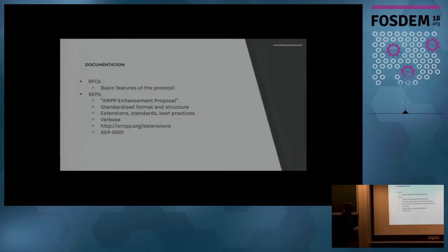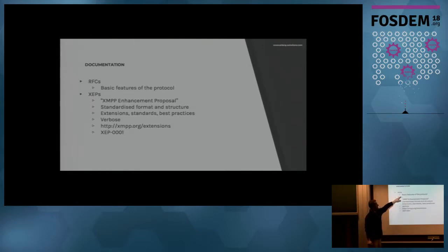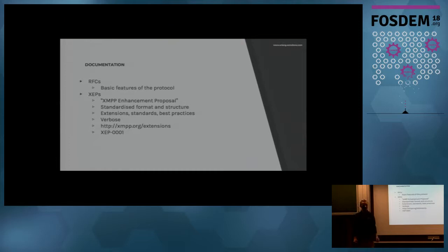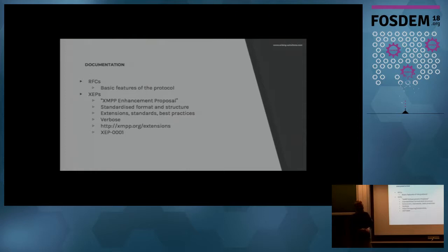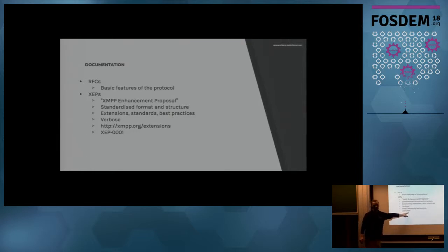XMPP is very well documented because the XSF guys are really tough — they demand very good specs. There are RFCs defining basic features and then the enhancement proposals. They all look pretty much the same because the format and style of writing must be consistent. There are hundreds of them covering extension formats, address formats, and lots of best practices. They're verbose, which takes a while to get used to, but that's a matter of personal preference. They are all listed on the website, and the most important XEP of all is XEP-0001, which tells us how to write XEPs — it's a sort of meta-XEP.